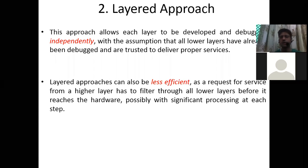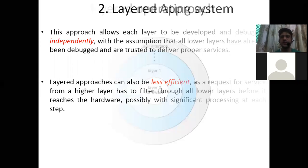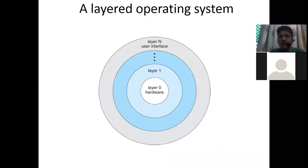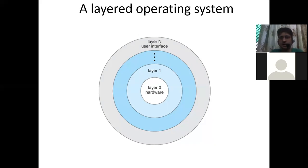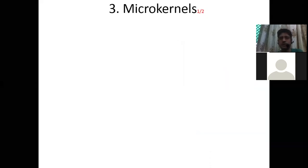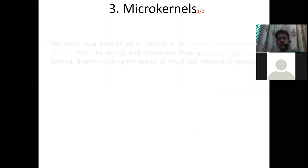In a real world, a student wants to interact with the vice chancellor but has to follow the hierarchy — each and every layer — to interact with the hardware. That is why in some scenarios it is less efficient. Here is a general diagram of a layered operating system: layer N is the user interface on top, and layer N wants to interact with layer zero, the hardware. In between there are a number of layers — application programs, system programs, drivers — each having specific functionality to provide to the user.